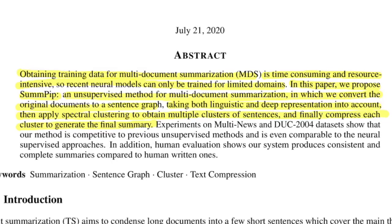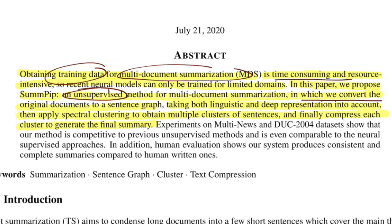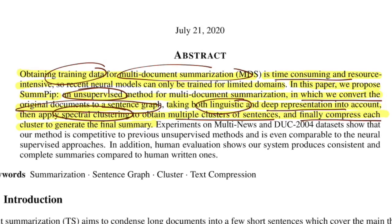The method they propose is unsupervised, meaning no training data is required. They convert each original document into a sentence graph — a graphical technique where edges between sentences are based on both linguistic and deep representations in context. Once the graph is in place, spectral clustering is applied to obtain multiple clusters of sentences, and then a compression algorithm is applied at each cluster to get the final summary. Summaries from each cluster are concatenated into the final summary, and the work is claimed to be competitive even compared to previous neural supervised approaches.